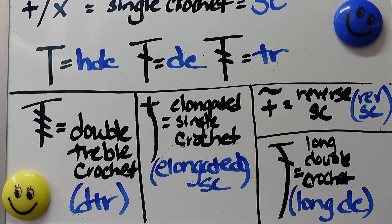Moving on, we have the reverse single crochet. We're using the plus sign again for single crochet, and it has a tilde symbol above the plus. That stands for reverse single crochet and its abbreviation is rev sc.